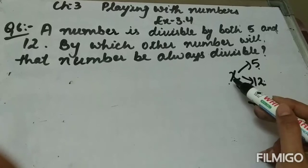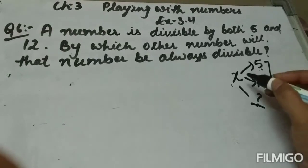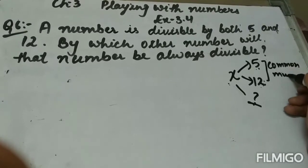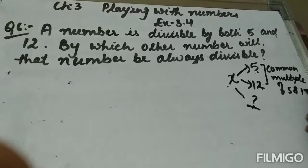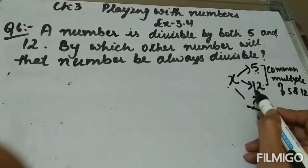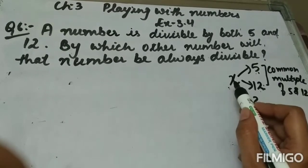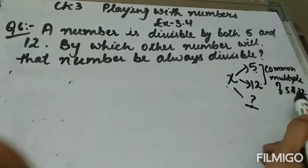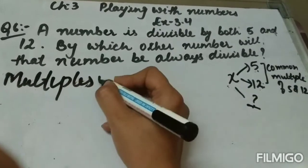Since this number is divisible by 5 and 12, this number will be divisible by the common multiple of 5 and 12. So firstly we will write the multiples of 5 and the multiples of 12 to find their common multiple.